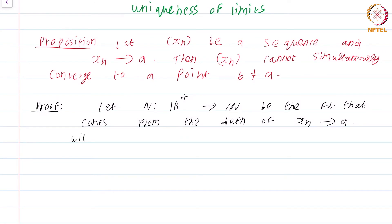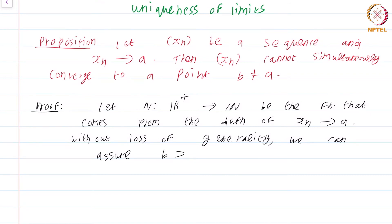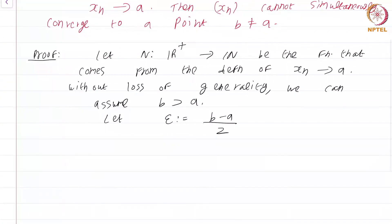You will understand in a moment why I decided to choose the function from R+ to N. Without loss of generality, we can assume that B is greater than A. Please go through the entire proof and check that this assumption of B being greater than A is really without loss of generality. Let epsilon be defined as (B minus A) divided by 2. There is no guarantee that B minus A by 2 will be less than 1 — that is why I chose N from R+ to N.